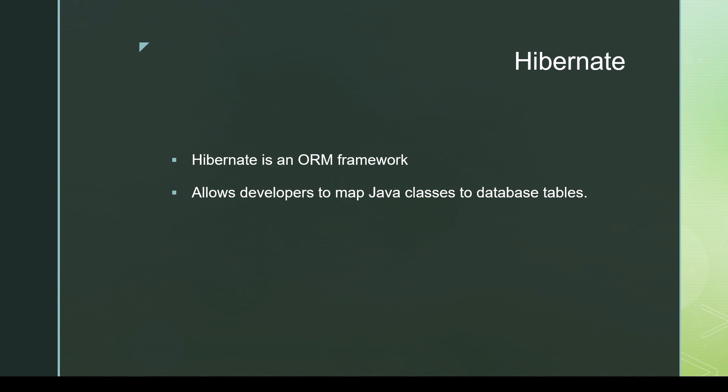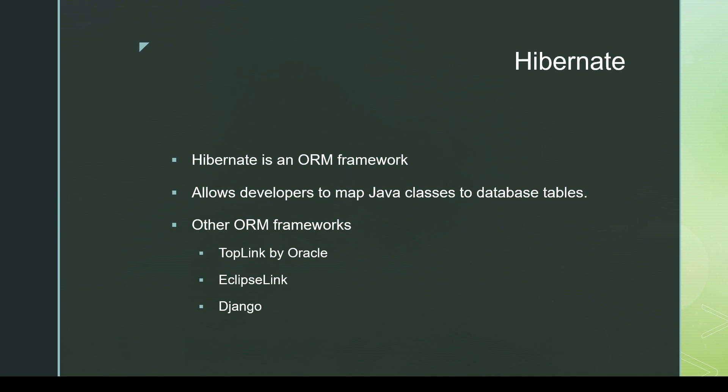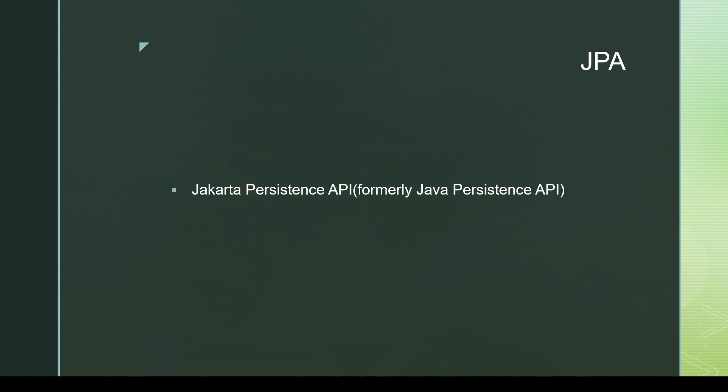In an application, if we are using just Hibernate then we say we are using native Hibernate, because there is no other abstraction and we are utilizing all the features of Hibernate directly. Hibernate is not the only ORM framework — other frameworks include TopLink by Oracle, EclipseLink, and Django for Python, for example. So ORM is a technique and Hibernate is an ORM framework.